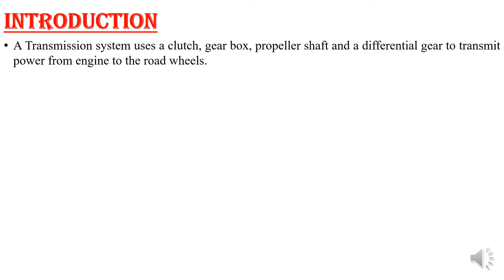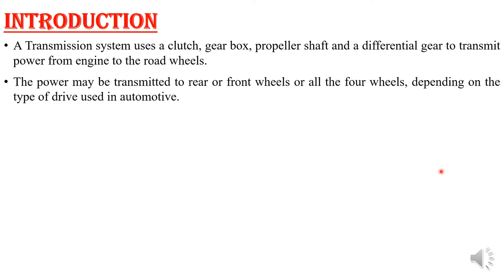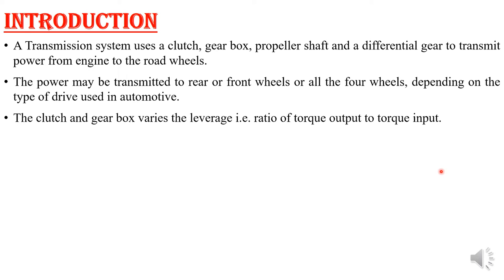So first we will start with the transmission system — what it actually contains. The transmission system uses clutch, gearbox, propeller shaft, and differential. Together it is known as the transmission system. Power produced from the engine has to be transferred to the wheels using the transmission system, depending upon the type of drive used in the automotive — either front wheel drive or rear wheel drive.